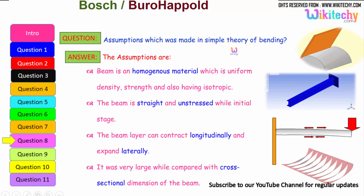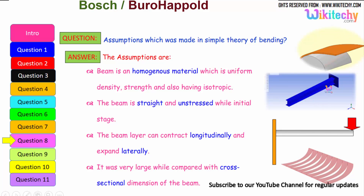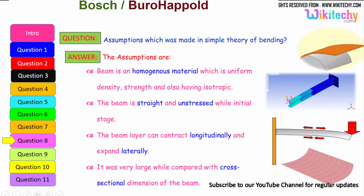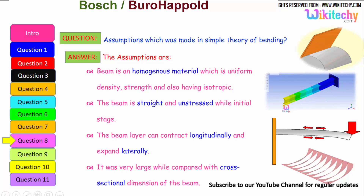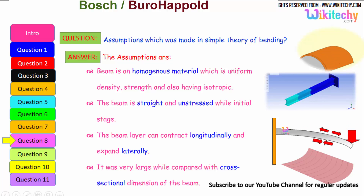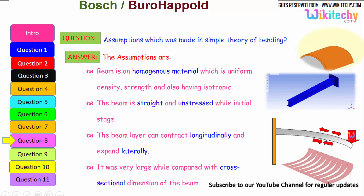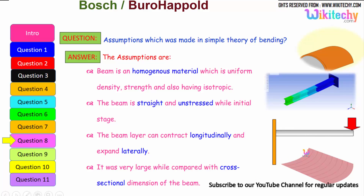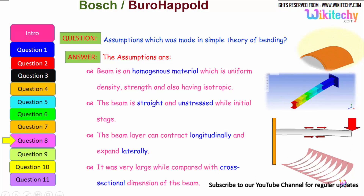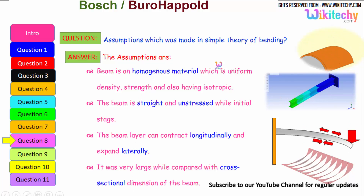What are the assumptions made in the simple theory of bending? The assumptions are: the beam is a homogeneous material with uniform density, uniform strength, and is also isotropic. The beam is straight and unstressed in its initial stage. The beam can contract longitudinally and expand laterally. The length of the beam must be very large when compared with the cross-sectional dimensions. These are the key assumptions for the theory of bending.